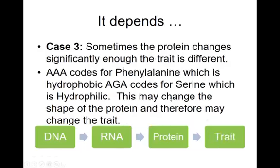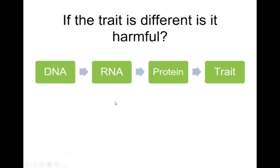Sometimes the protein changes significantly enough that the trait is different. For example, AAA codes for phenylalanine, which is hydrophobic. But if the second letter is converted to G, AGA codes for serine, which is hydrophilic. That may change the shape of the protein enough to actually change the trait.